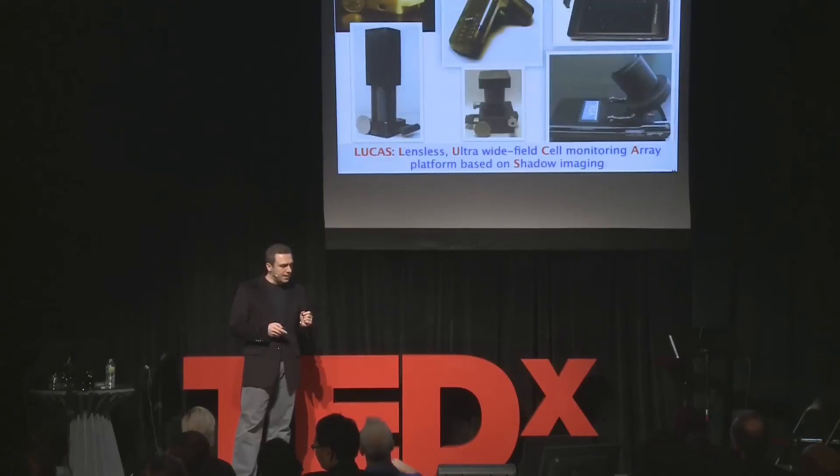To give you the scale of the problem: co-infections — HIV, TB, and malaria together cause more than 4 million deaths a year. If you add to this number issues related to poor drinking water, we're losing more than 6 million. So, using the cell phone as the backbone, we can do a lot.